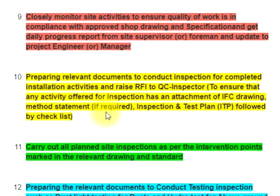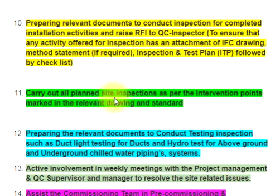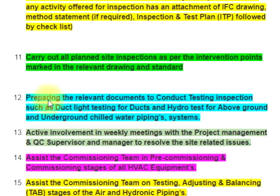Attach the method statement if required, inspection and test plan (ITP), followed by checklist. Carry out all planned site inspections as per the intervention points marked in the relevant drawings and standards. Prepare relevant documents to conduct testing inspections such as duct leak testing for ducts and hydro test for above ground and underground chilled water piping systems.